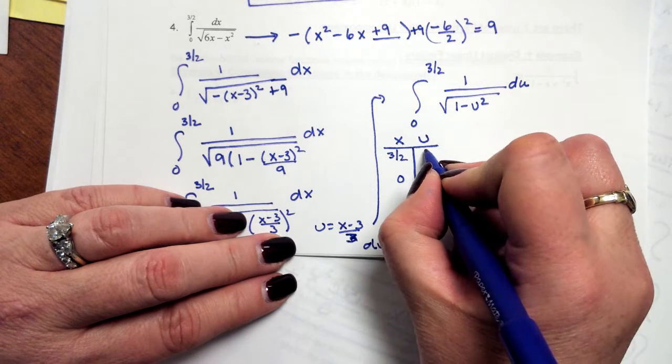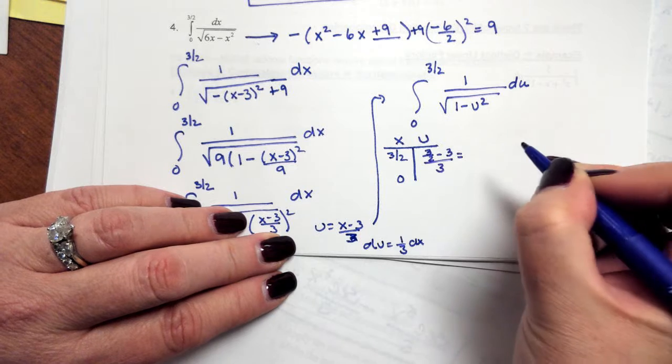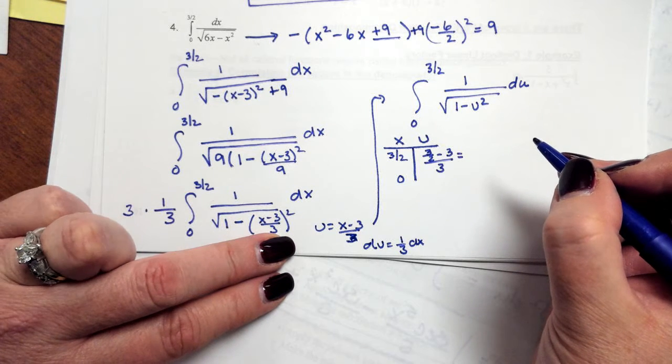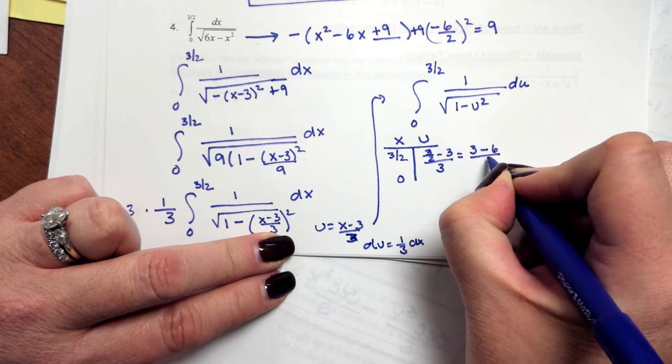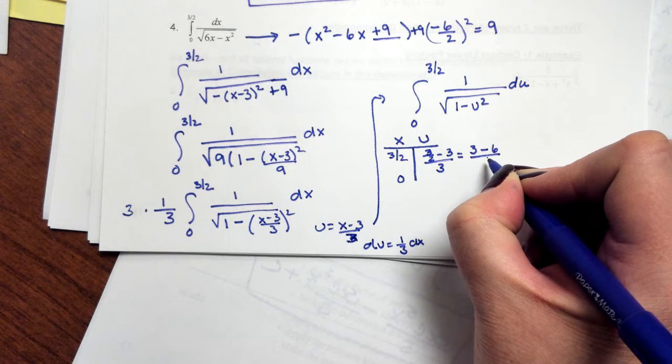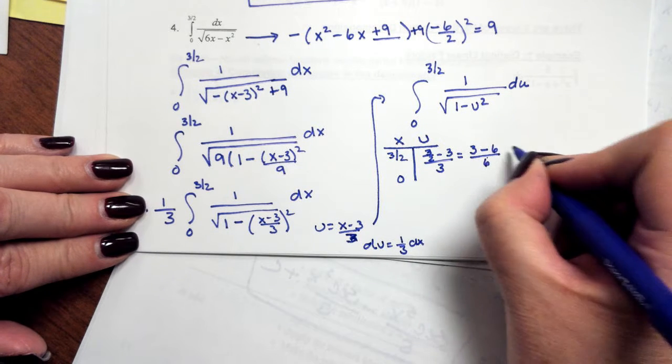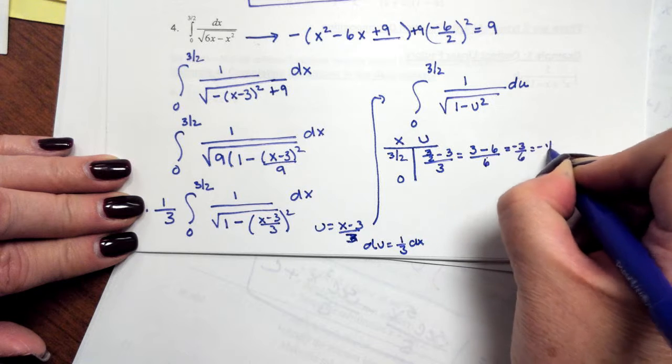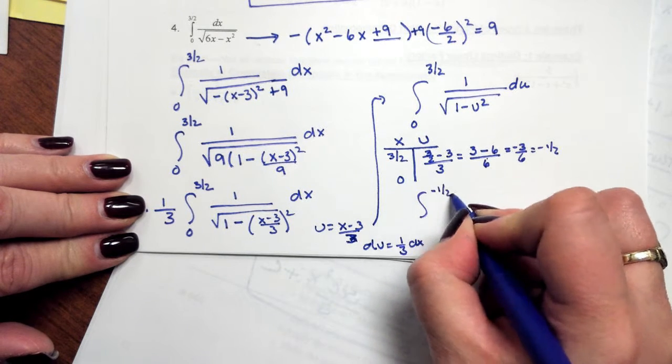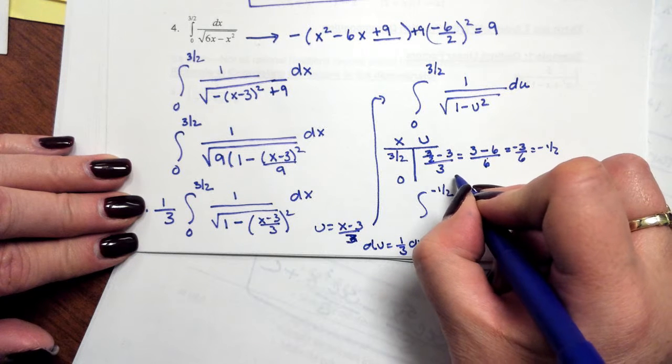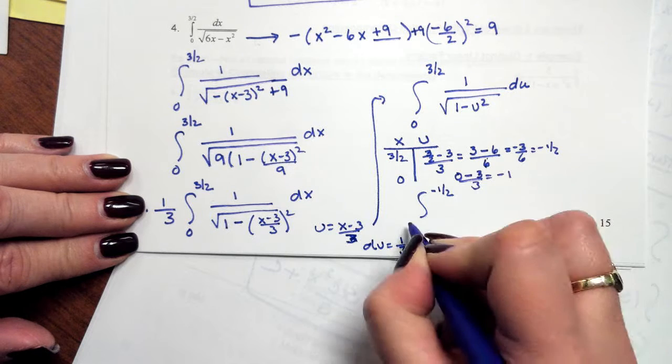So when I rewrite my bounds, I have 3 halves minus 3 all over 3. So this is going to give me 3 minus 6 over 6. 2 times 3 is 6. 3 minus 6 is a negative 3 over 6, which is a negative 1 half. So then my new upper bound is going to be a negative 1 half. In terms of 0, when I plug in 0, 0 minus 3 over 3, that's going to give you a negative 1.